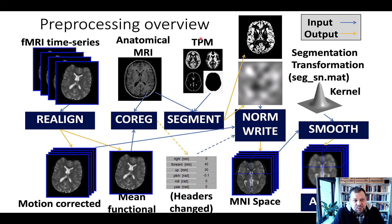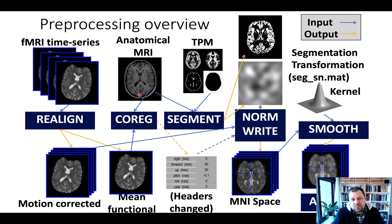The next steps we want to do is to prepare the data for group-level statistical analyses. So we have to align each individual brain to a normalization template, basically to get it into the same space across different brains. We'll co-register the anatomical MRI to the mean functional image, and then segment the anatomical MRI into tissue probabilities, which at the same time normalizes the image using relatively sophisticated algorithms.